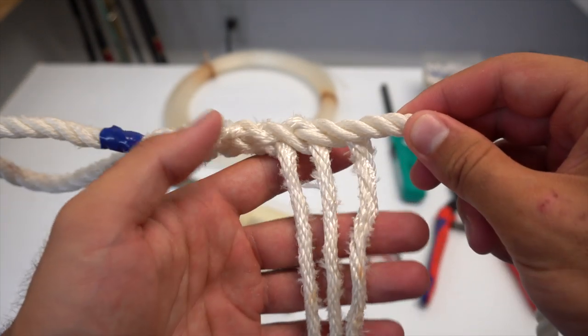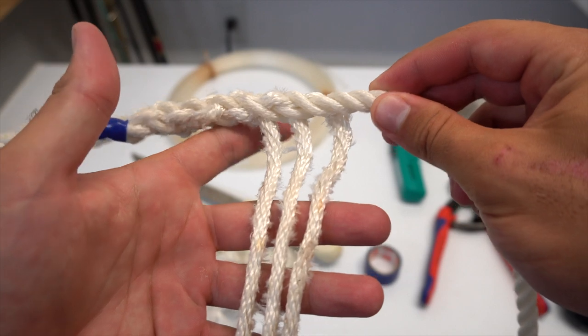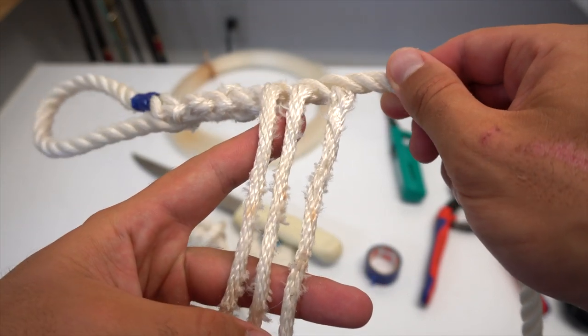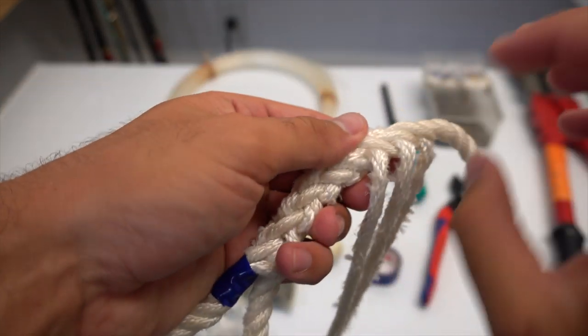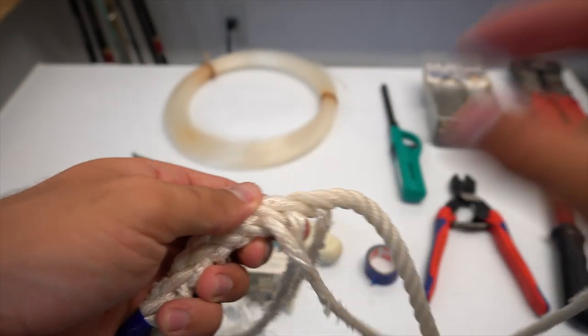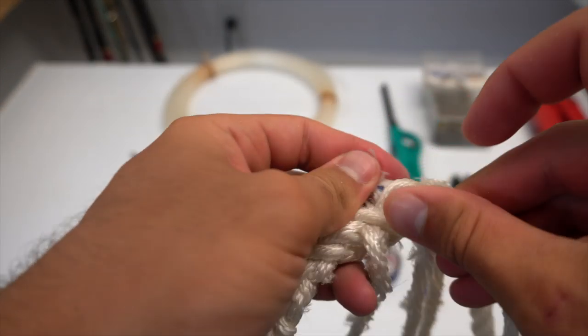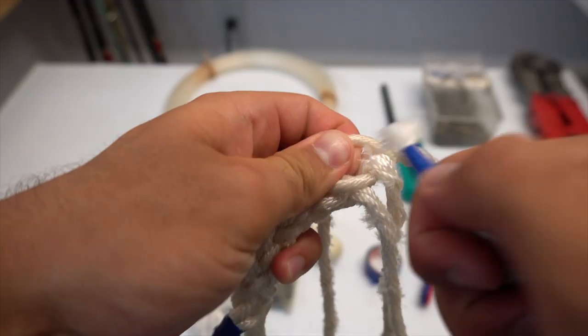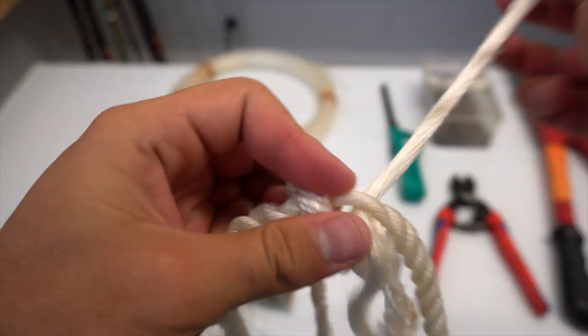So once you've done enough braiding and you're satisfied with how many are on there, you want to make sure that you end each strand at about the same spot on the rope.